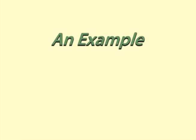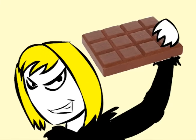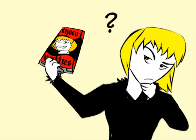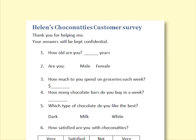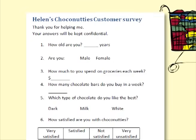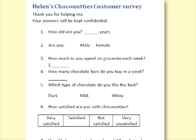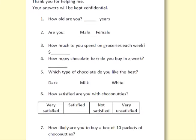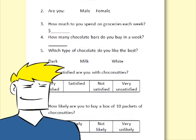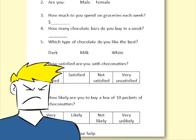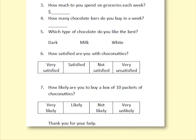Here is an example using different types of data. Helen sells Choconuttis and is interested in developing a new product to add to her line. She develops a questionnaire and asks a random sample of 50 customers to fill it out. She asks their age and sex, how much they spend on groceries each week, how many chocolate bars they buy in a week, which they like best out of dark, milk, and white chocolate, how satisfied they are with Choconuttis — very satisfied, satisfied, not satisfied, or very unsatisfied — and how likely they are to buy a whole box of 10 packets of Choconuttis.